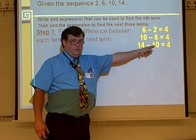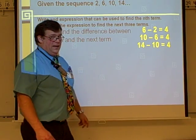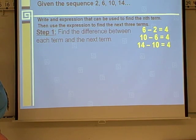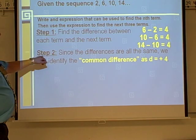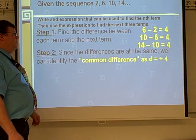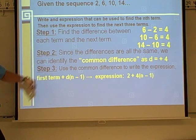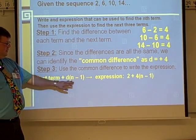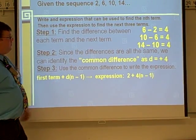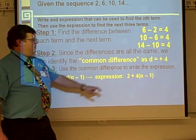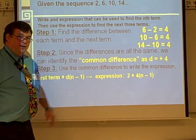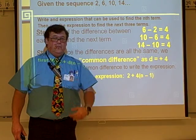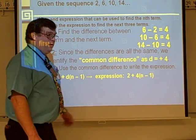If there was a different value when we did the subtraction, then you would not have an arithmetic sequence and you'd have to look at something else. Step two: since the differences are all the same, we identify the common difference as d = +4. Step three: use the common difference to write the expression using the formula — first term plus d times (n minus 1). The first term is 2, the common difference is 4, and the (n minus 1) stays as a variable because we don't know what term we're looking for.